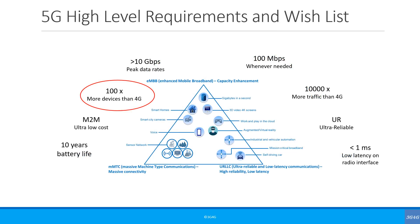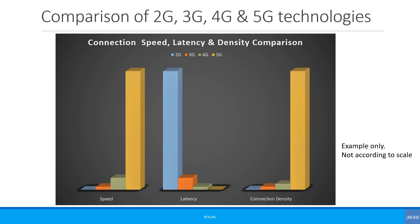To explain density, if we look at the 5G high level requirements and wish list, it is envisaged that there should be 100 times more active users in a 5G cell than in a 4G cell. There is no requirement that this should be done with the same amount of bandwidth, so this point is open for interpretation. Comparing 2G, 3G, 4G and 5G, you will notice that speed increases dramatically, latency decreases dramatically, and connection density increases dramatically from 2G to 5G.